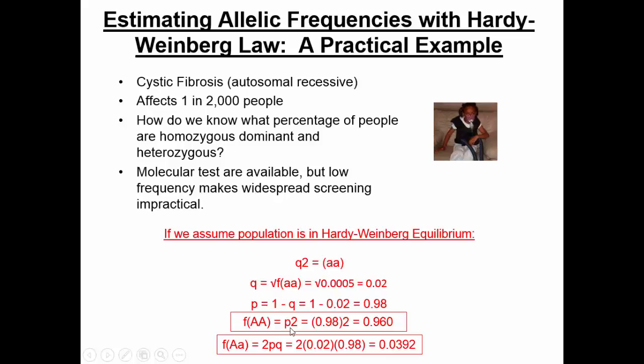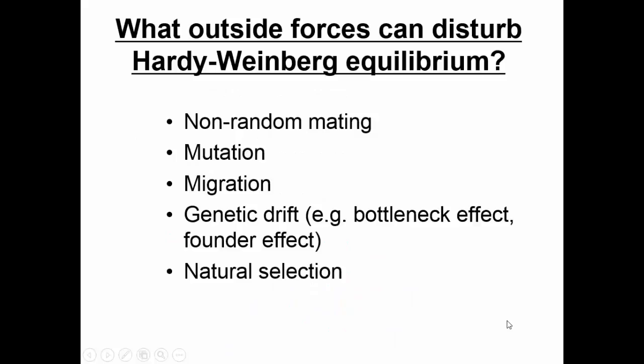Why is the heterozygote so important as opposed to the homozygous dominant individual? The heterozygote is important because they have a normal phenotype — we can't identify them just by looking — but they're carriers. They have the ability to pass on the abnormal phenotype if two heterozygotes meet and breed. That's why we look at the frequency of the heterozygote to determine if we should have molecular tests available for a given population. This is a practical application of Hardy-Weinberg.